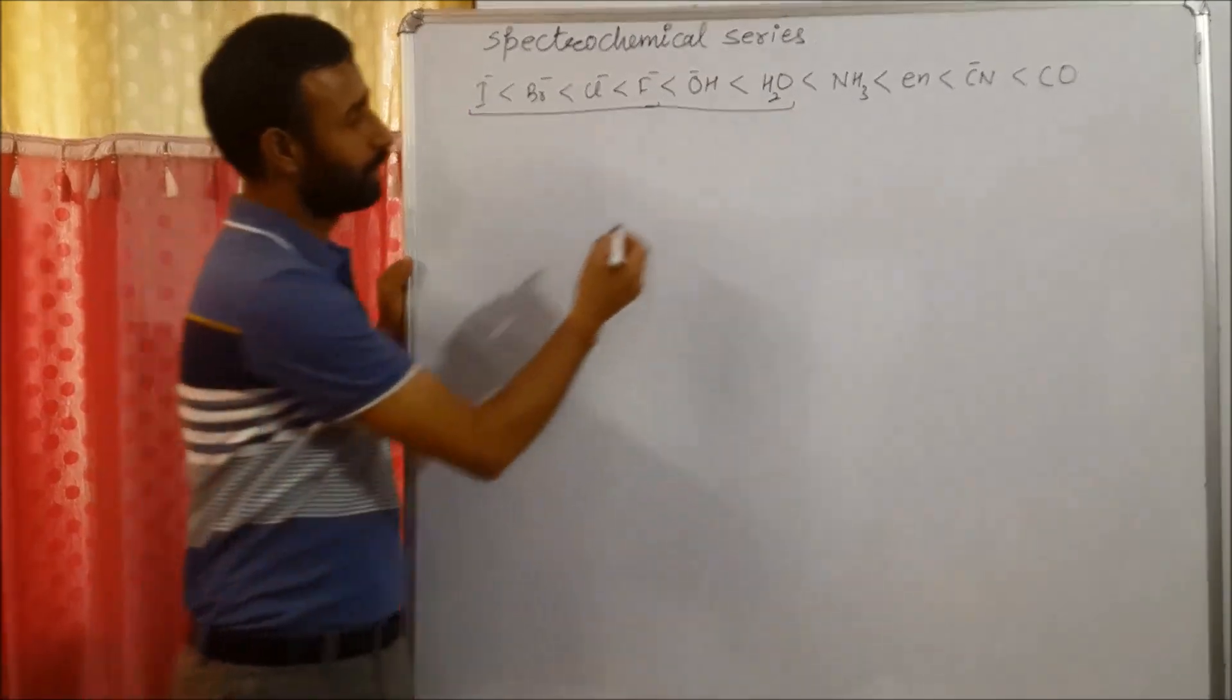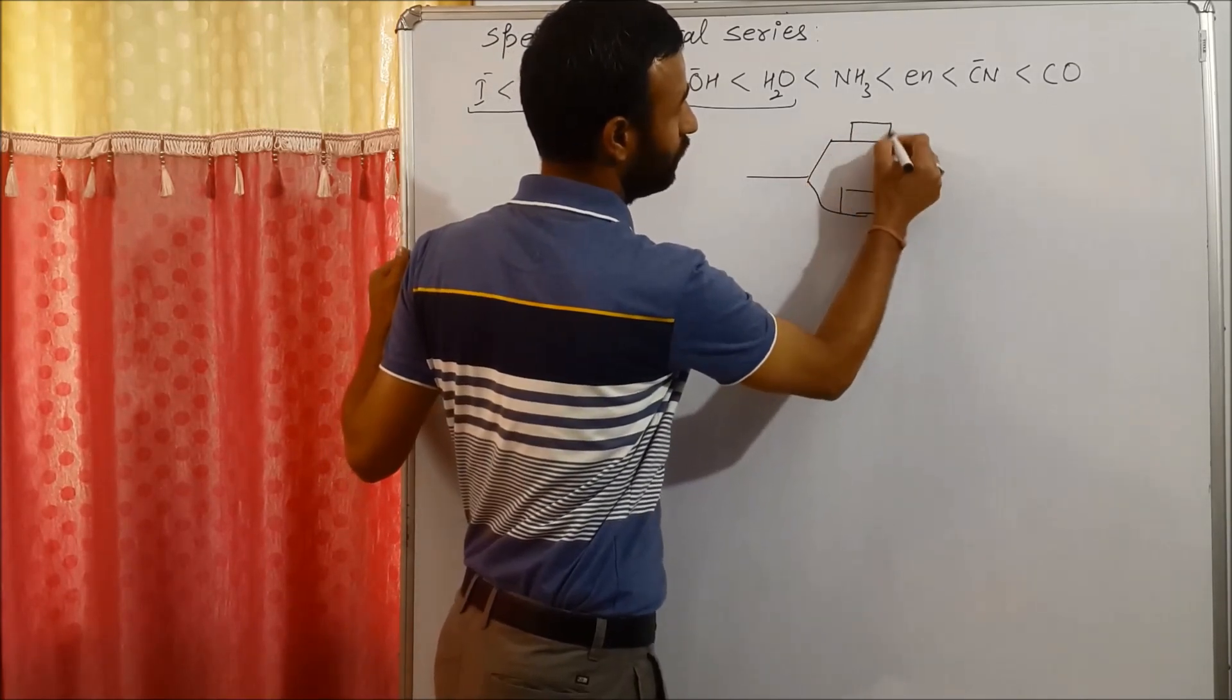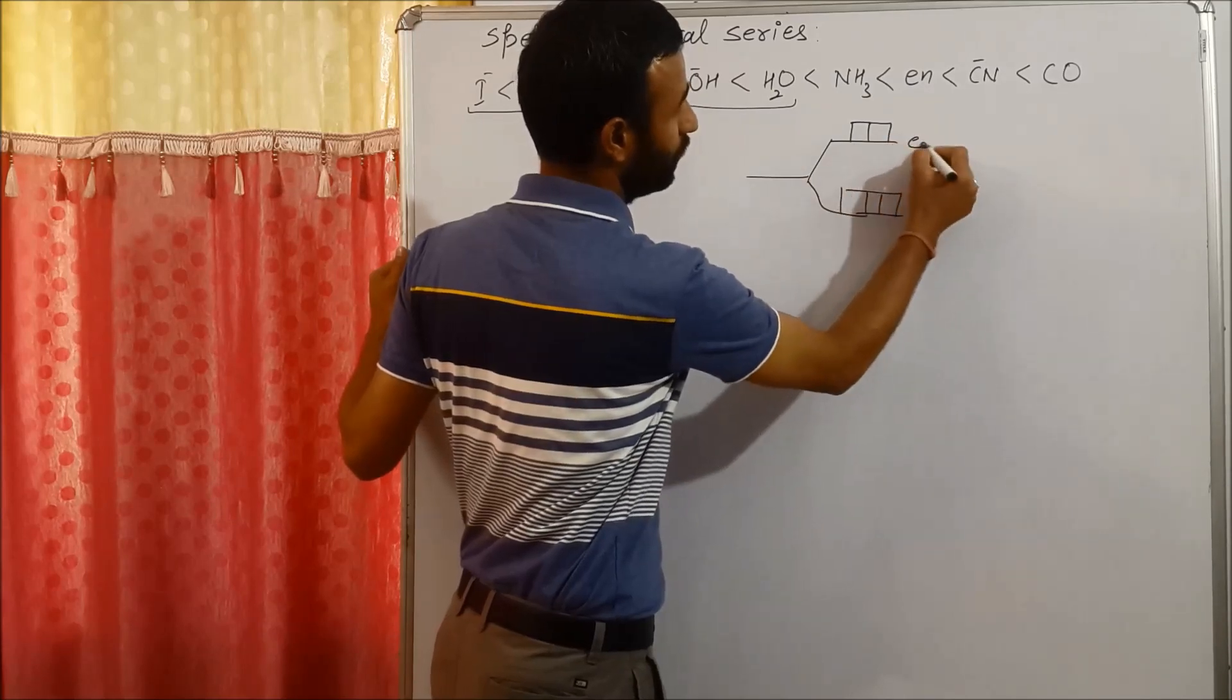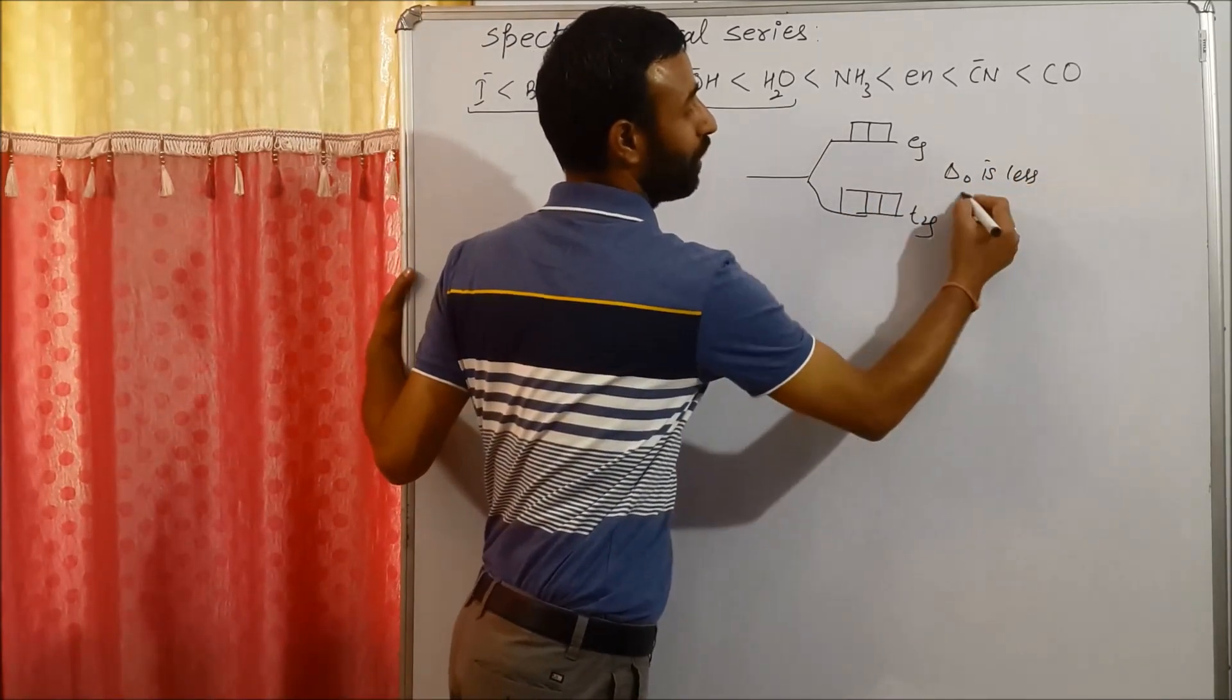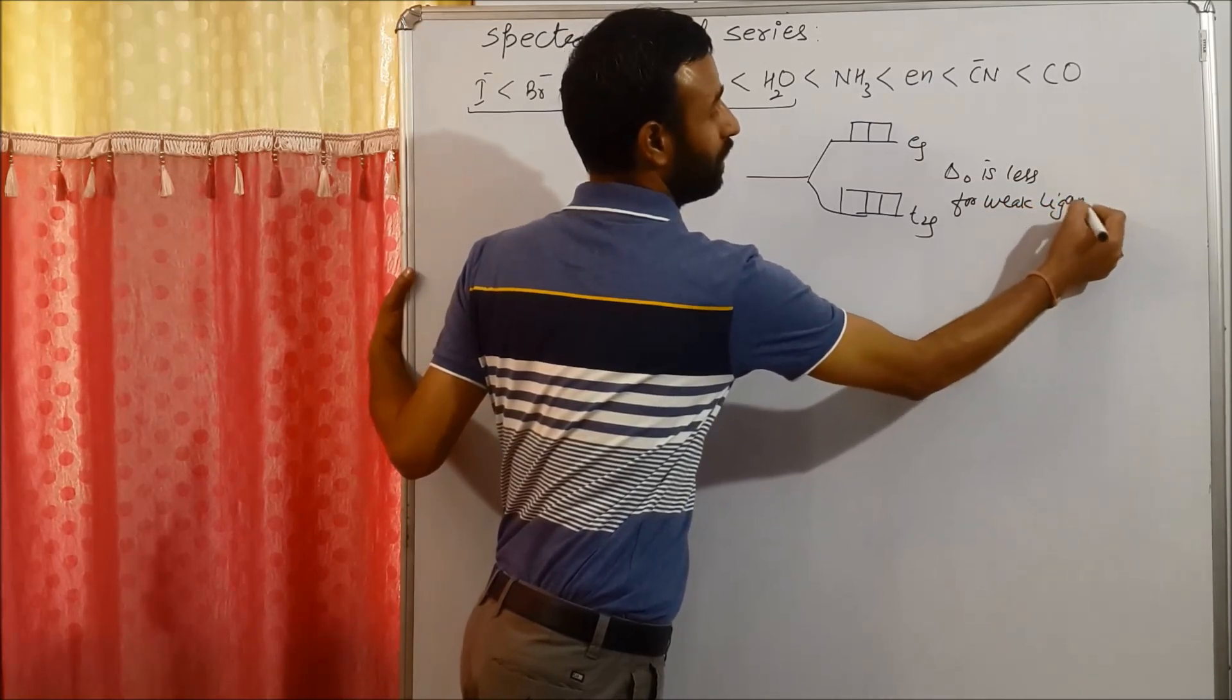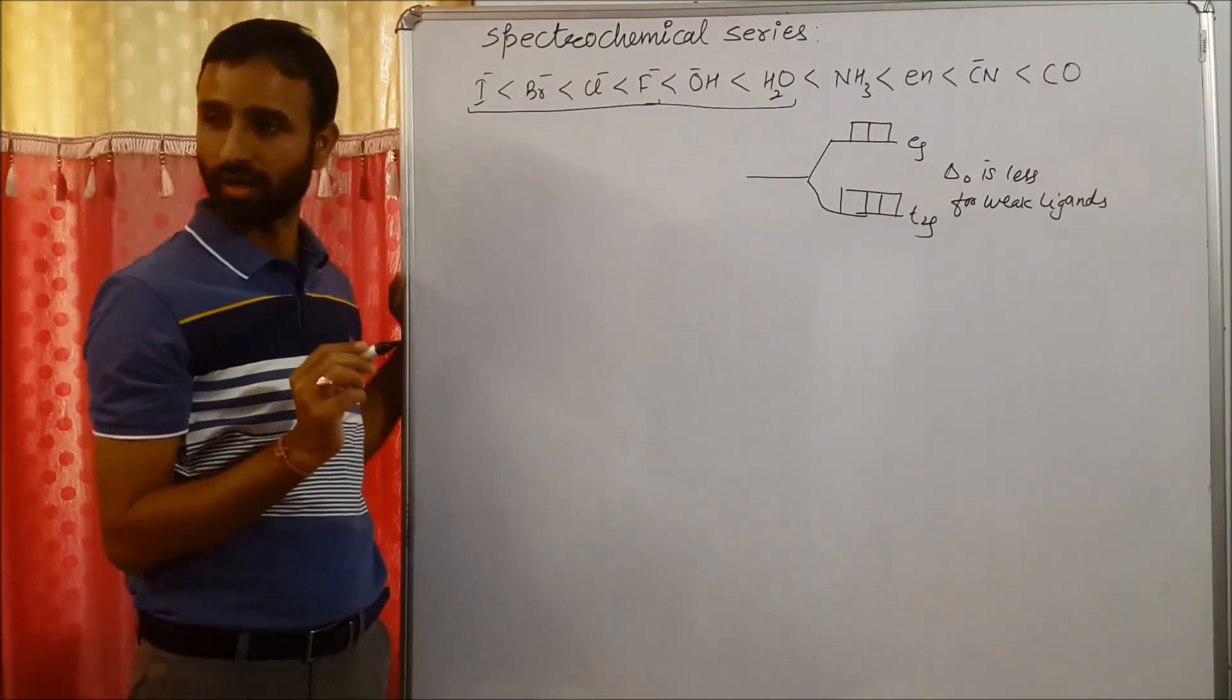Now weak ligands do less splitting of the d orbital. This is T2G and EG. So splitting is less, means delta O is less for weak ligands. So halides, all halides are weak ligands, even hydroxide, water, they are weak ligands.